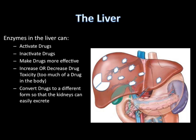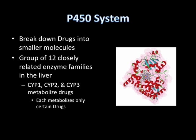The P450 system breaks down drugs into smaller molecules. They are a group of 12 closely related enzyme families in the liver. CYP1, CYP2, and CYP3 all metabolize drugs, and each metabolizes only certain drugs.